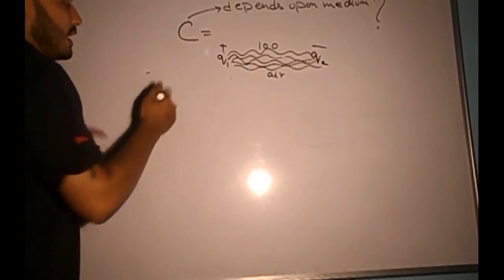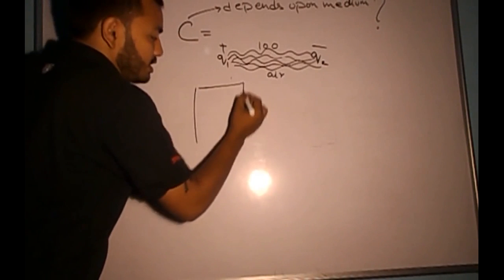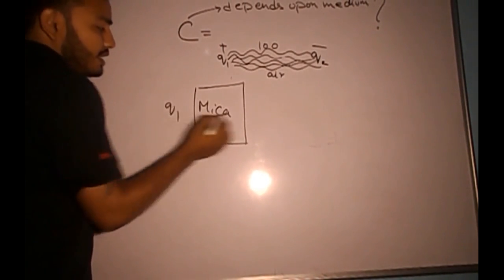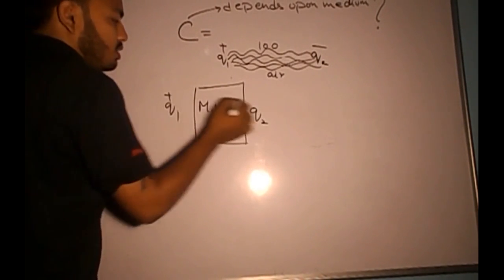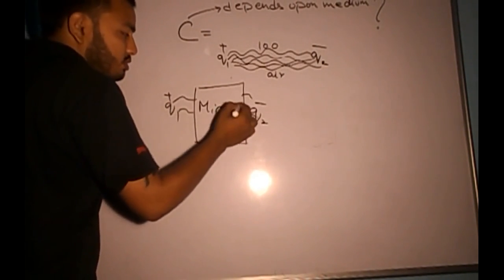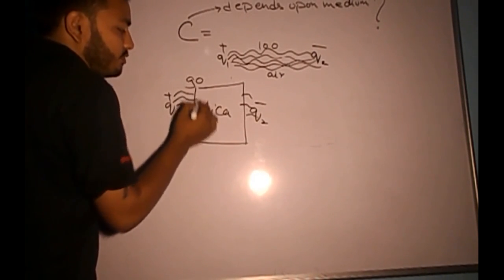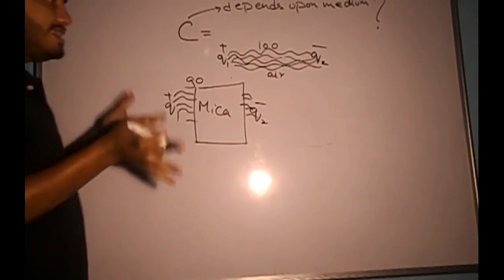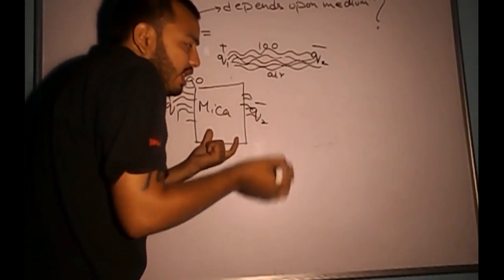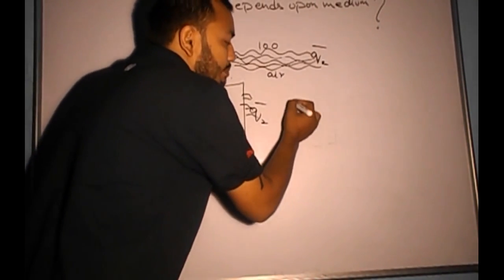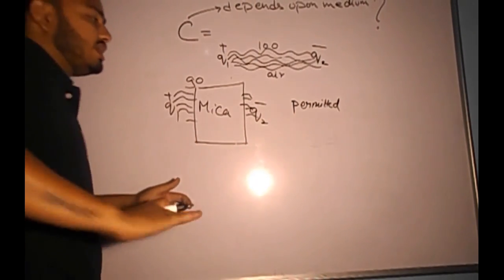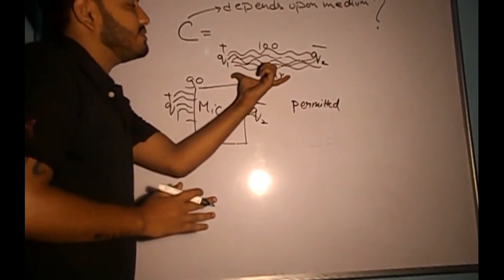Suppose we dip the charges in another medium — a Mica sheet between Q1 and Q2. Mica is an insulating material. Suppose this Mica sheet allows only 90 of the strings to pass through and 10 strings are blocked. That means the Mica sheet has permitted 10 of its own lines to interfere within those lines.